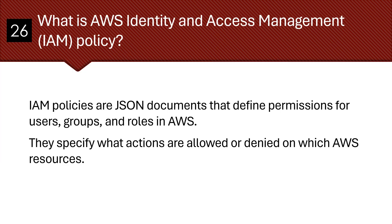What is AWS Identity and Access Management Policy? IAM policies are JSON documents that define permissions for users, groups, and roles in AWS. They specify what actions are allowed or denied on which AWS resources.